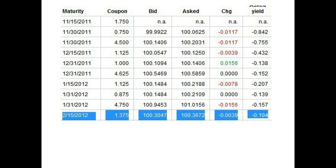The bid and ask prices are quoted as percentages of par value. The par value is $1,000. Therefore, the bid price of the highlighted issue is 100.3047% of par value, which is $1,003.05.